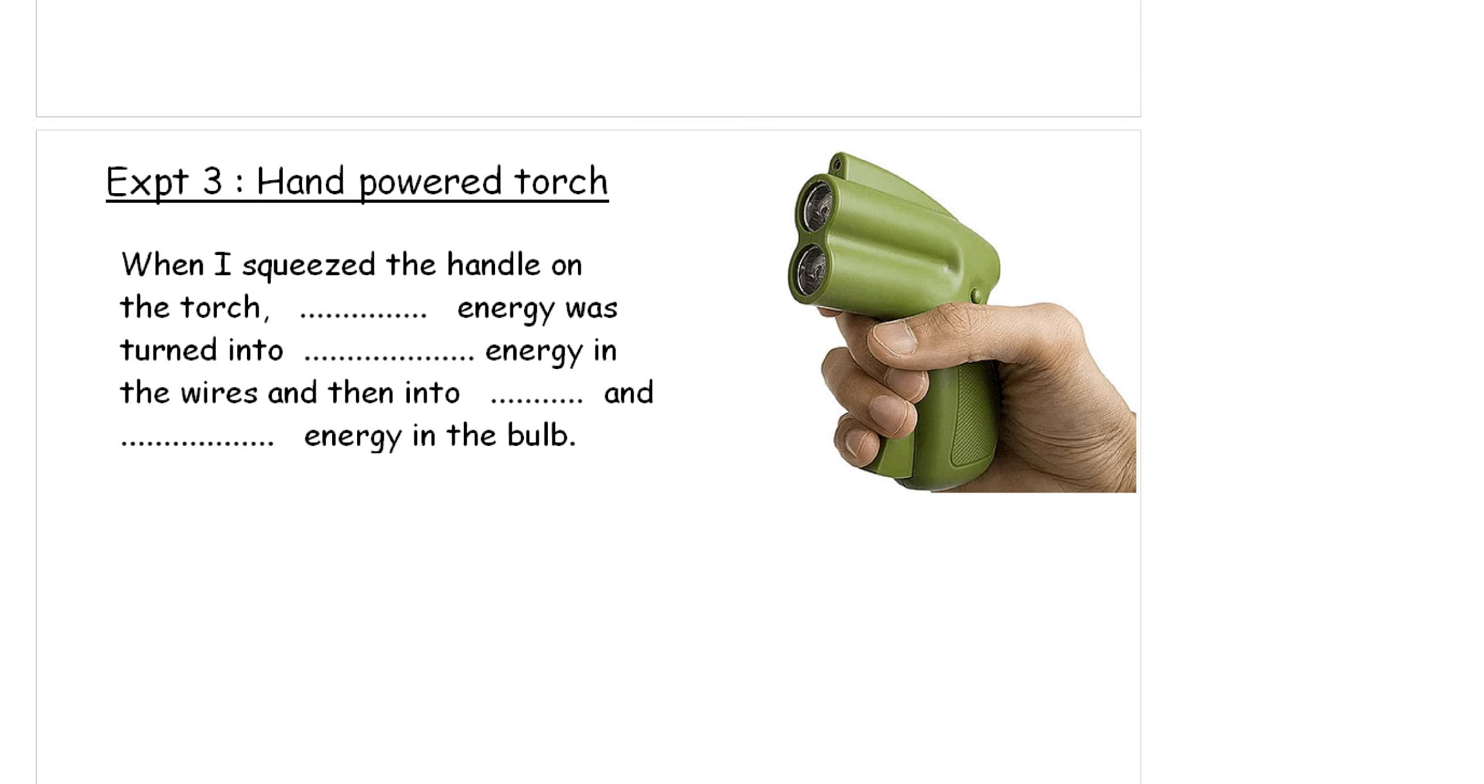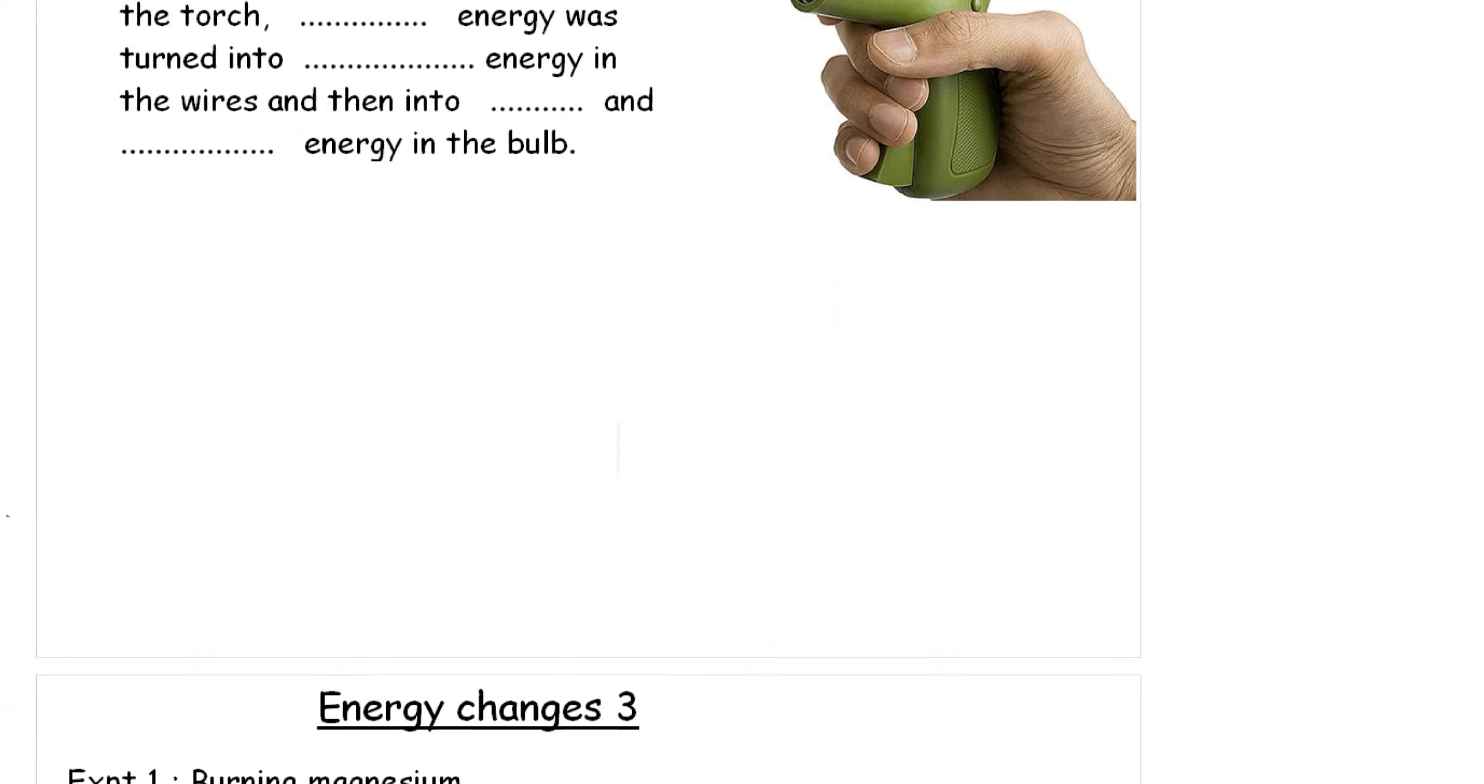Experiment number three: when I squeeze the handle on the torch, kinetic energy was turned into electrical energy in the wires and then into light and wasted heat energy in the bulb. That's the answer to the first one. So, let's move on.